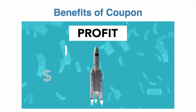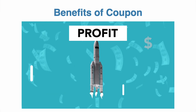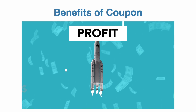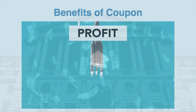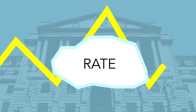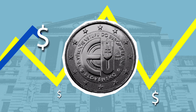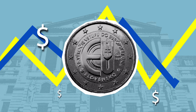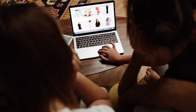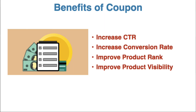What are the benefits of Coupons? Coupons are the easiest and best way to promote your product on Amazon so that you can sell more. If a customer clicks on your product coupon, your click rate increases and improves your conversion. When conversion increases, your rank increases. With rank increase, your product gets increased visibility. So these are the benefits of Coupons.